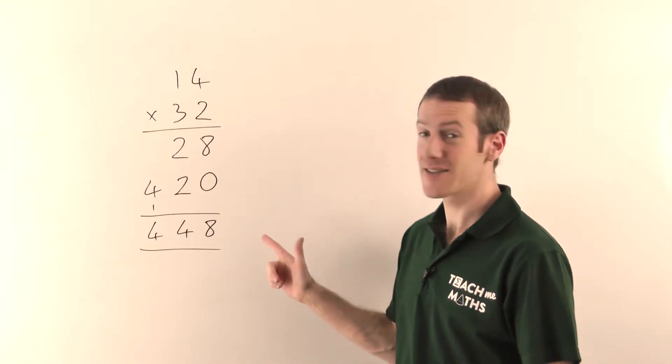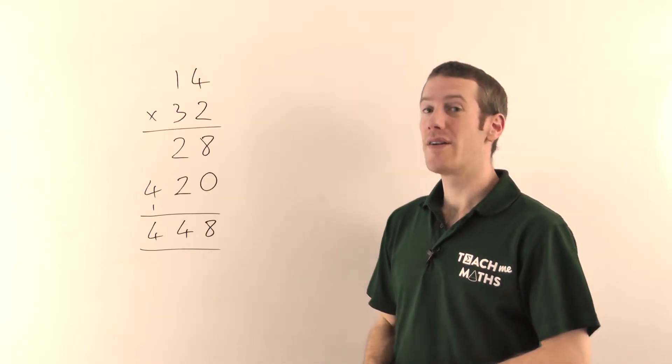Just very quickly then, traditional multiplication tends to look like that, whereas the grid method tends to look like that.